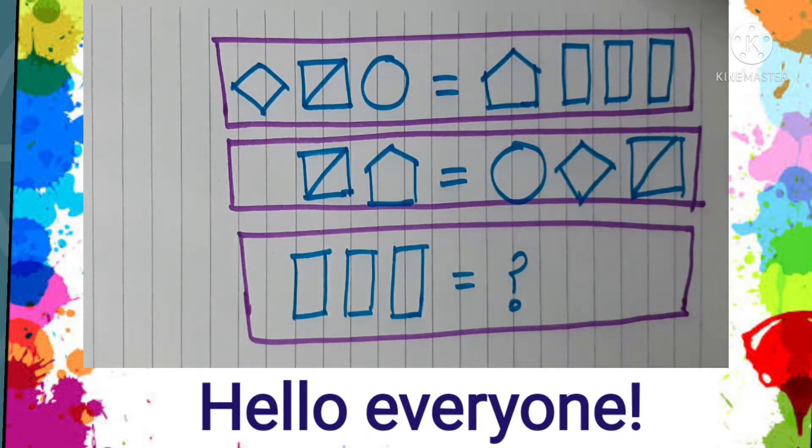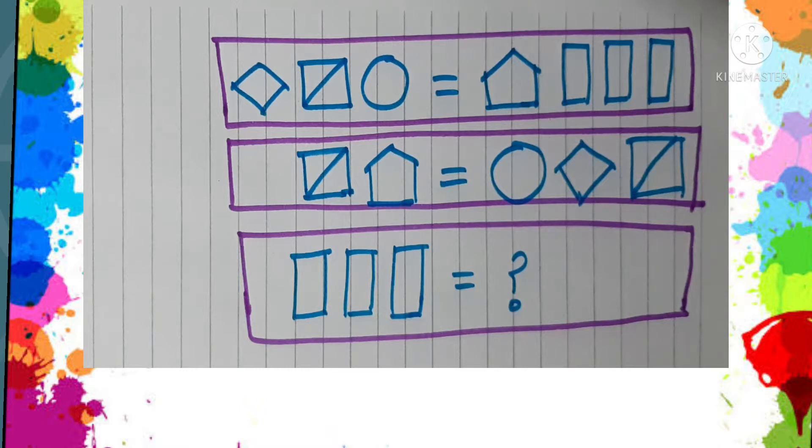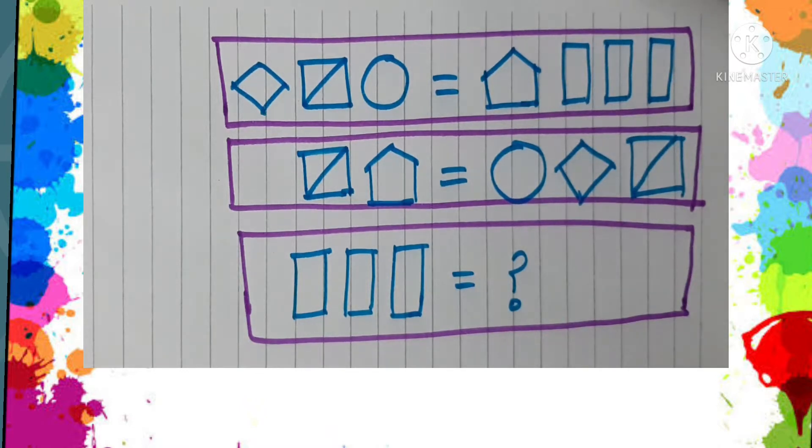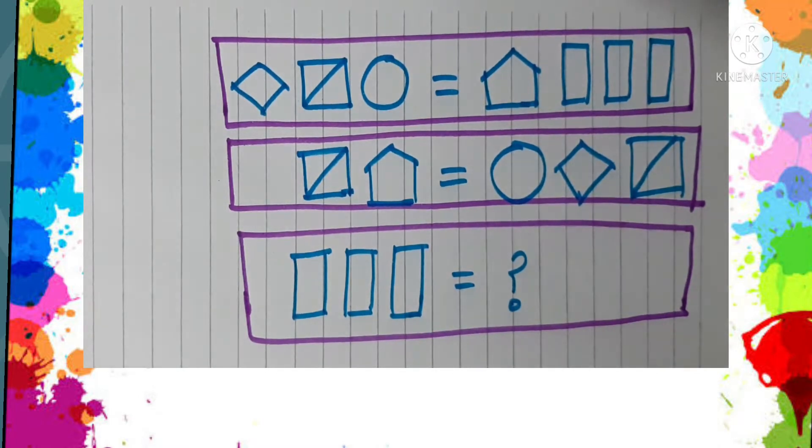Hello everyone, are you ready to solve today's puzzle? It's an interesting observation-based logical puzzle. You can see that there are three blocks in which a relationship is given between some shapes, and we need to find out what will be the outcome of these three rectangular bars.